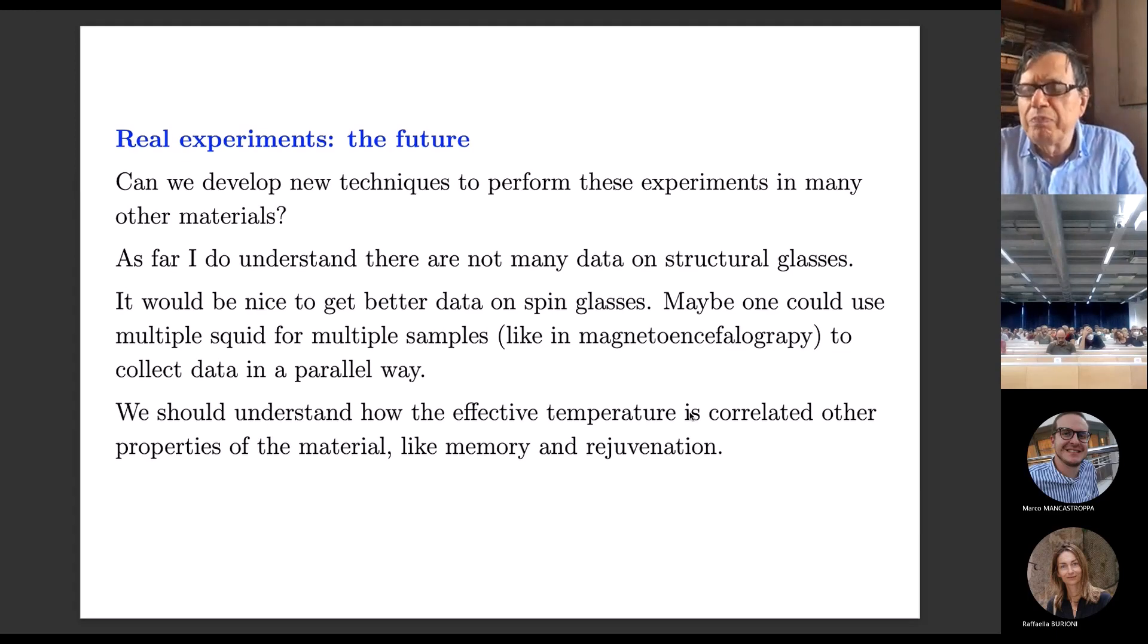The point is that in principle, in glasses, you can use an optical system like it was done in colloids for laponite. But this, as far as I know, but maybe I'm wrong, it's very difficult to measure the magnetization of the system optically. Of course, one can invent something. That would be very nice. Because if you do optical data, it's quite easy that you can move your laser beam very fast from one point to another point and measure the fluctuations in different points in an almost simultaneous way.